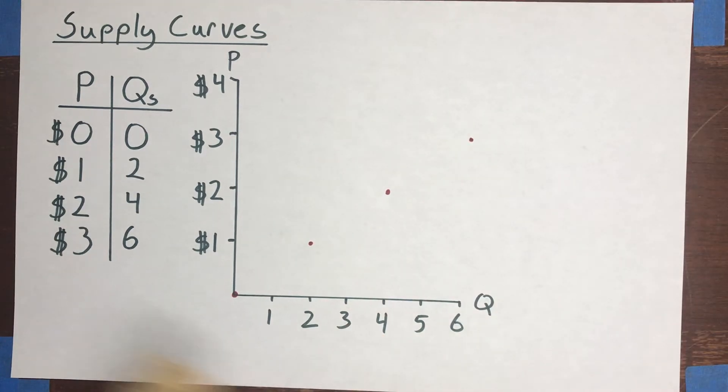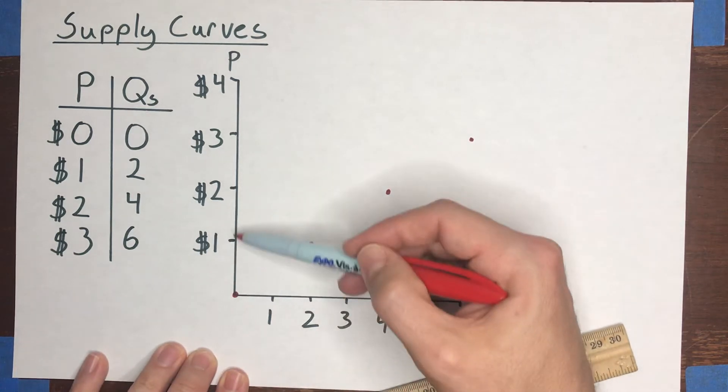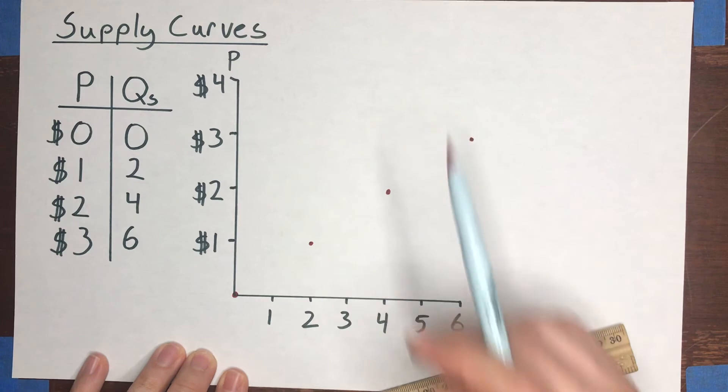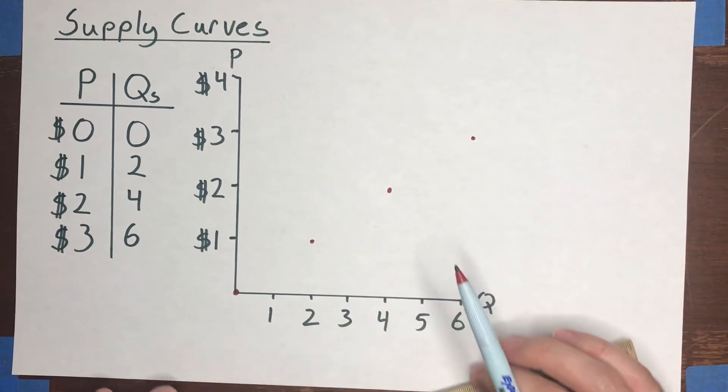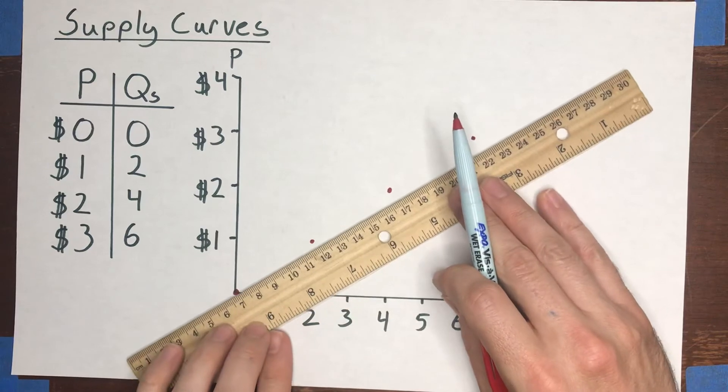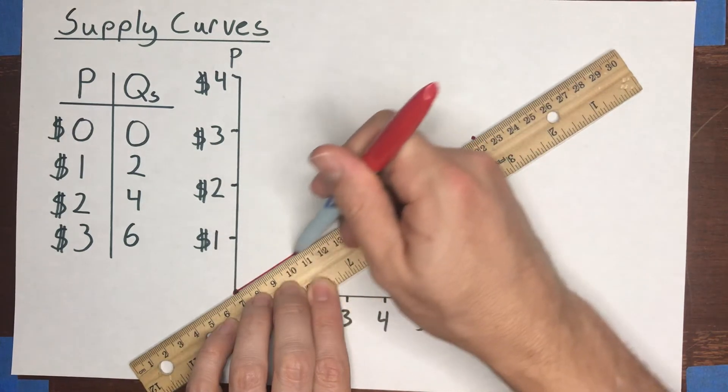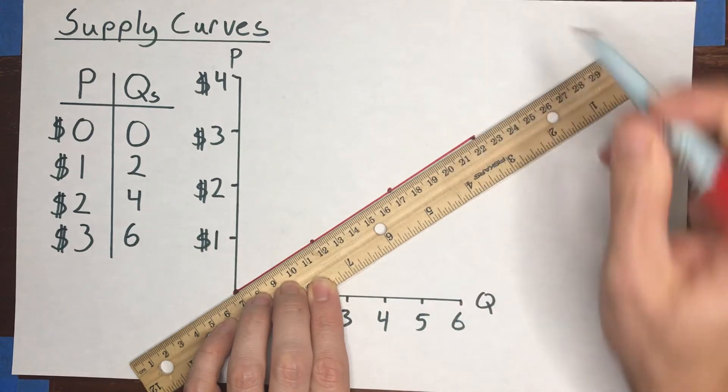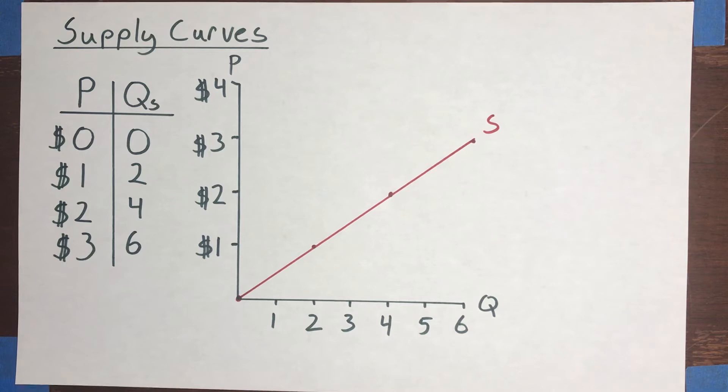And now just like with demand, we can imagine charging prices that are in between zero, one dollar, two dollars, three dollars, and fractions of cans being sold so that we get a full curve that looks like this. That would be the supply curve for this market.